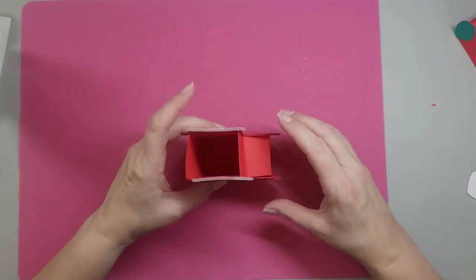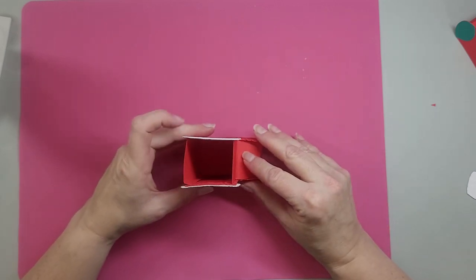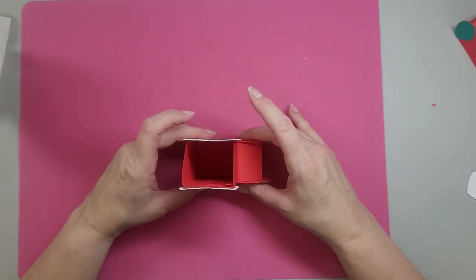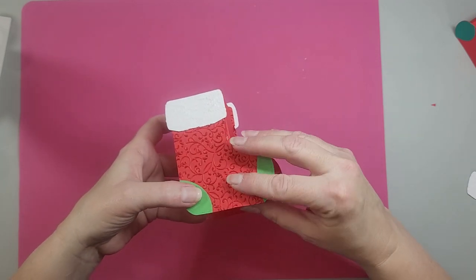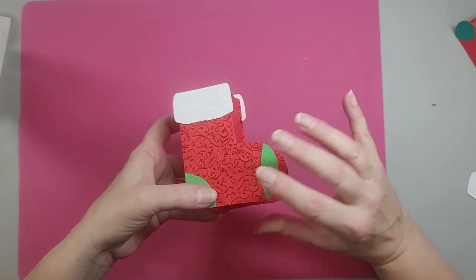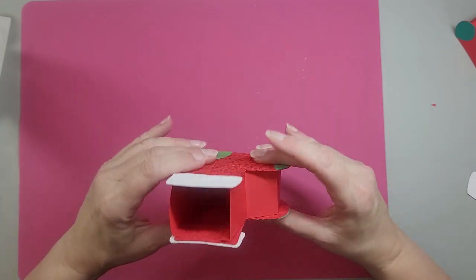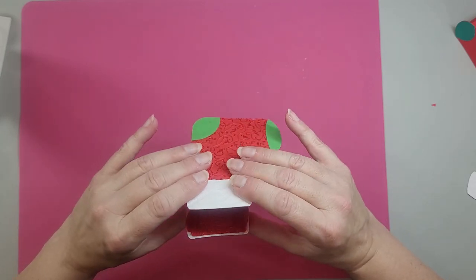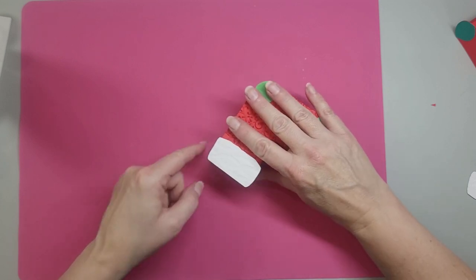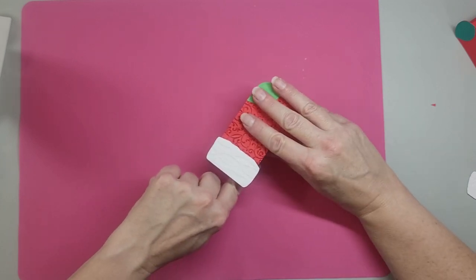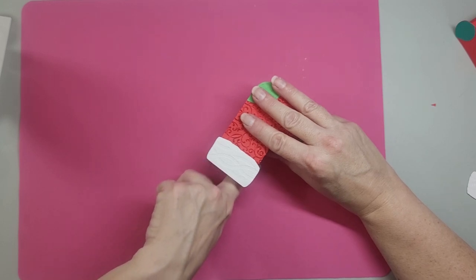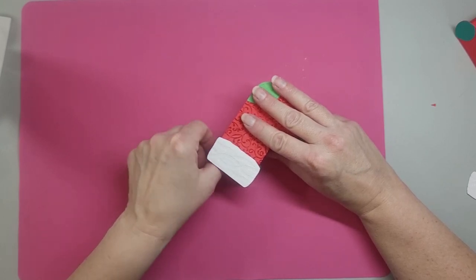You're going to want to make sure that the bottom is equal. So your stocking will stand up. Line it up where you want it on the sides. And then run your finger inside.